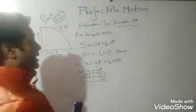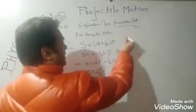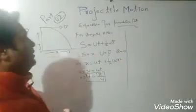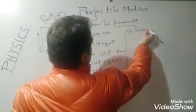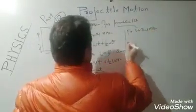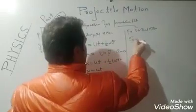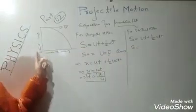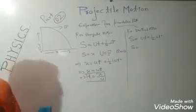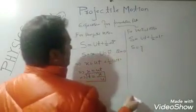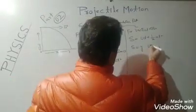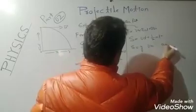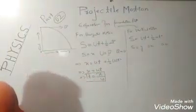Now for vertical motion — using the same established equation s = ut + ½at². Here s is replaced by y. The question is: what is u and what is a for vertical motion?